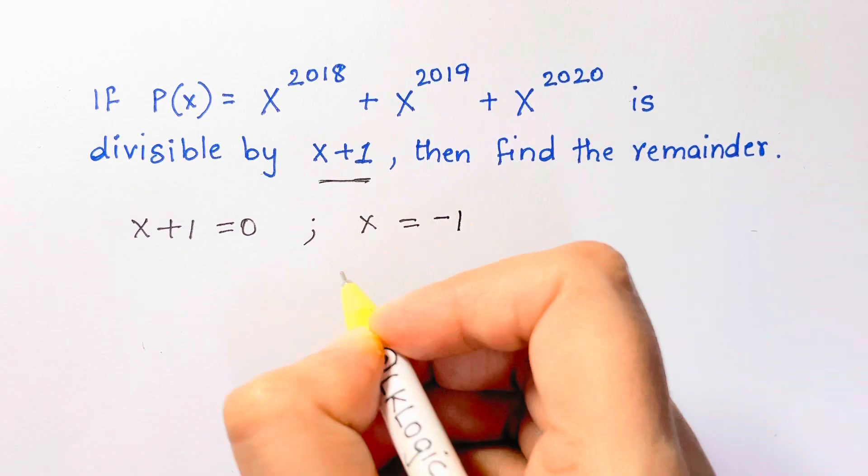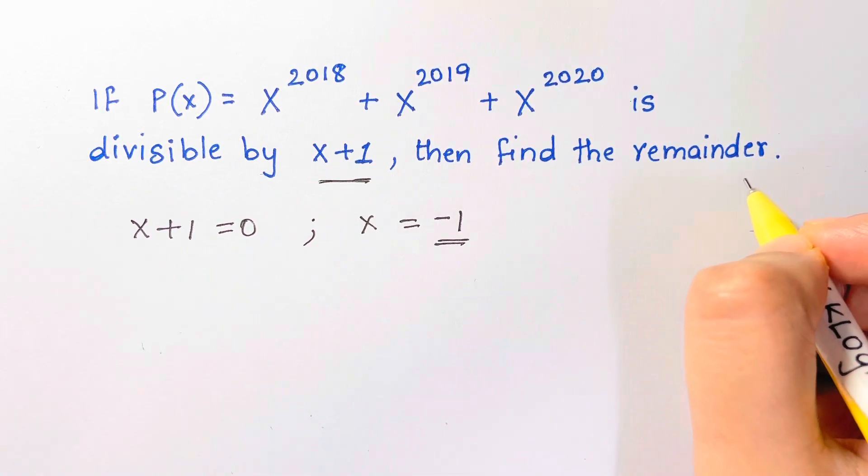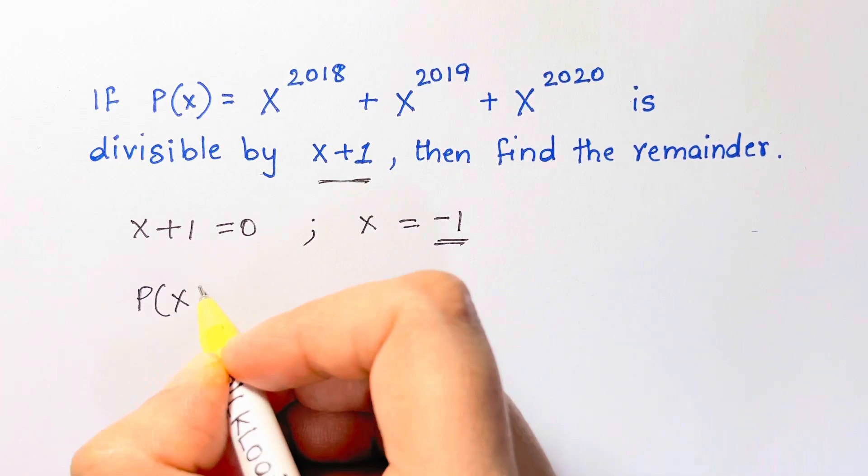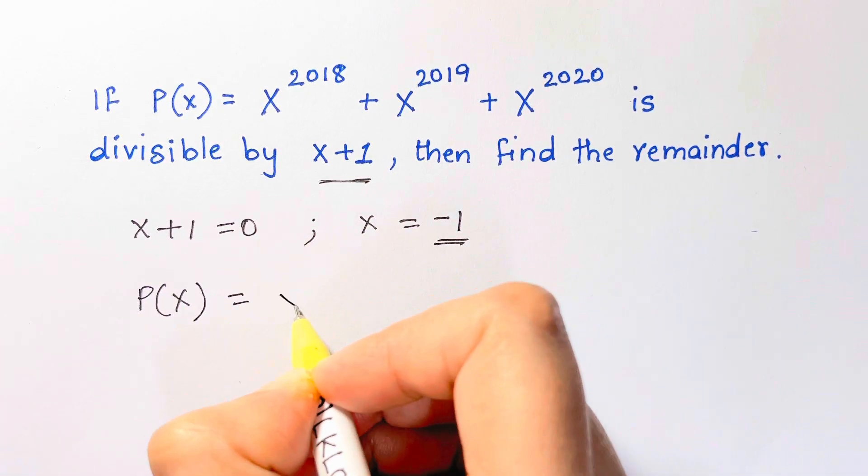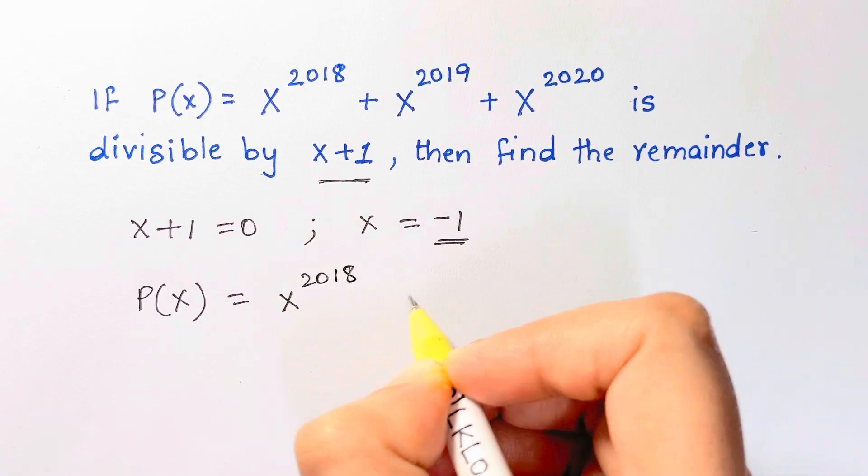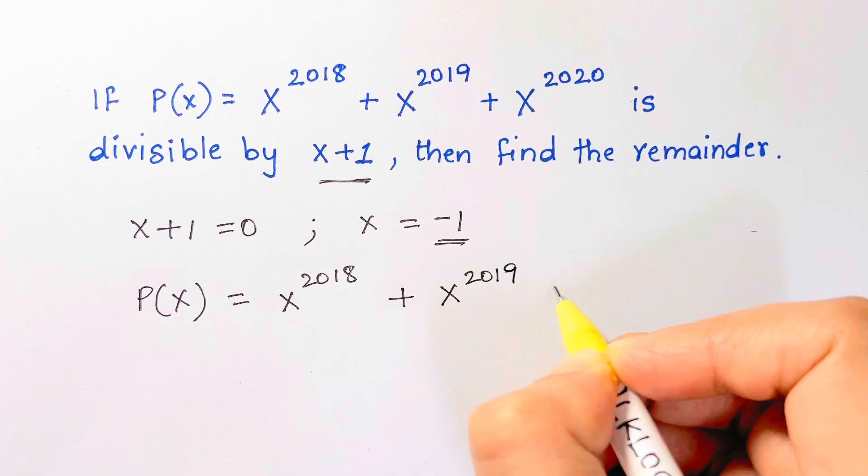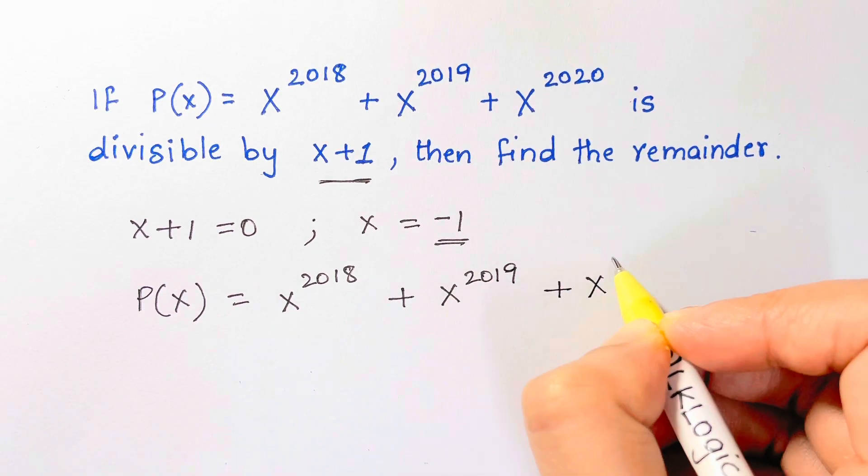We use remainder theorem here. What is our P of x? Let me write it down here. P(x) is equal to x to the power of 2018 plus x to the power of 2019 plus x to the power of 2020.